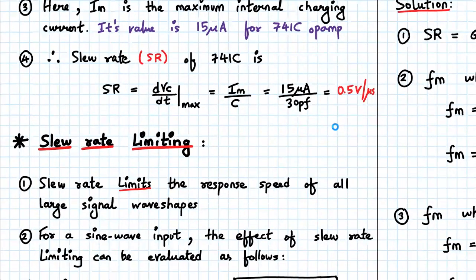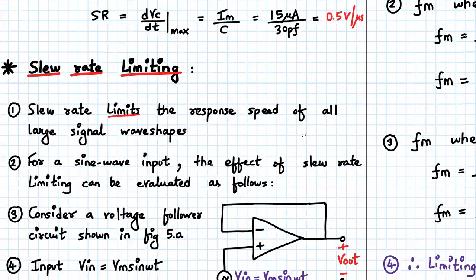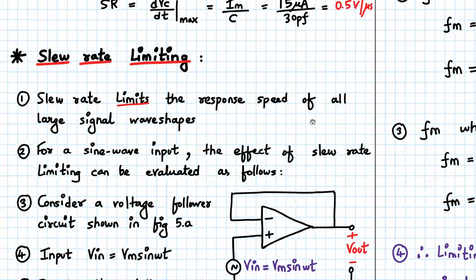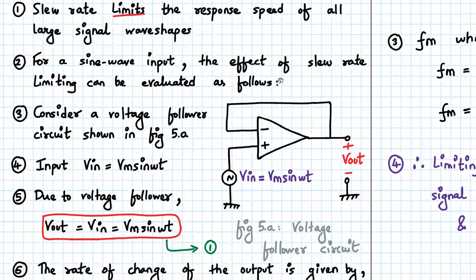Now we will go for the next concept that is slew rate limiting. So let us go to the first point. The slew rate will limit the response speed of all the large signal waves. Okay, so let us understand this first point by an example. So let us say you have a sine wave and we want to see the effect of slew rate limiting for the following scenario.